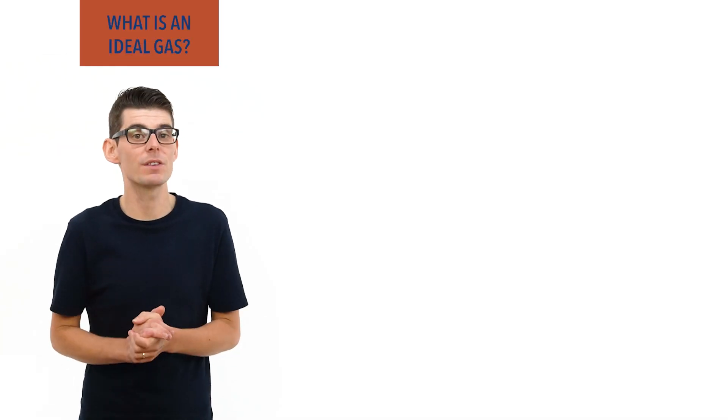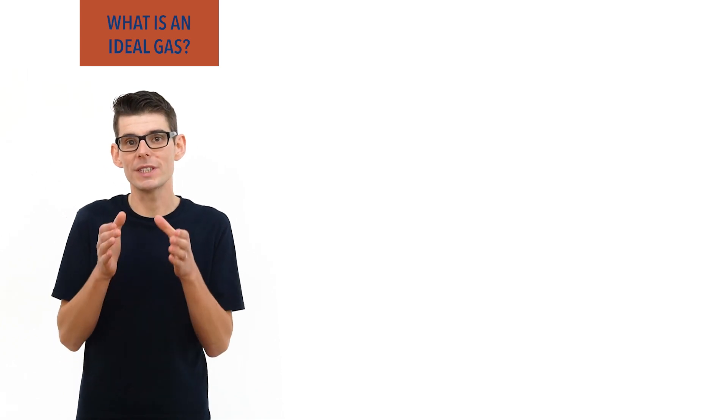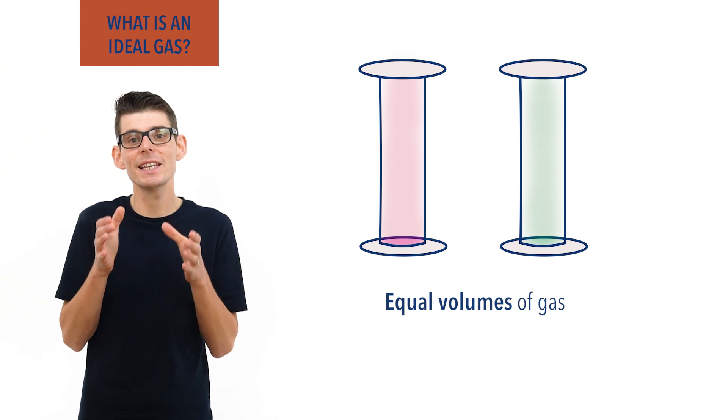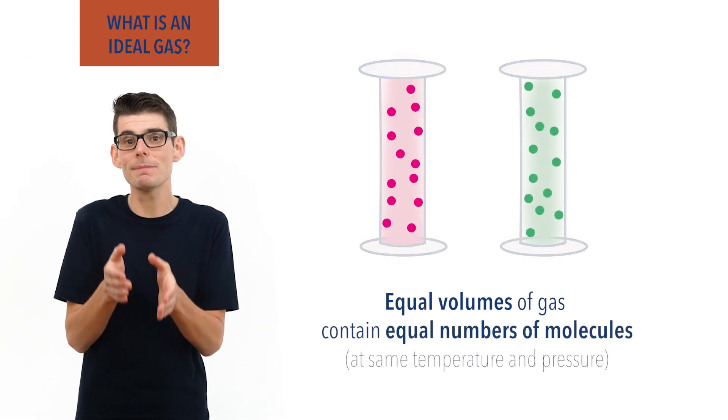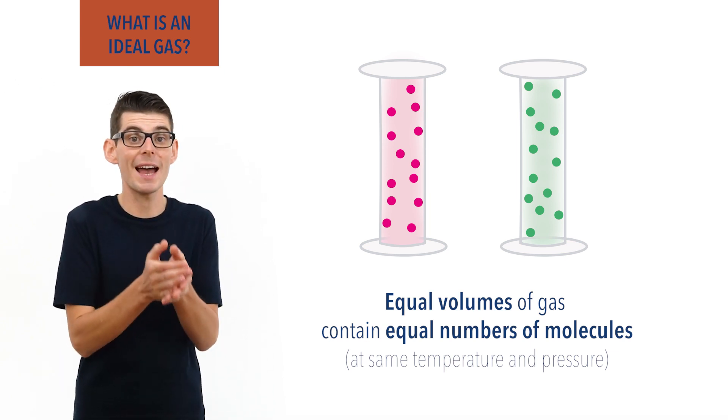In the early 19th century, the Italian scientist Avogadro proposed that equal volumes of gas at the same temperature and pressure contain equal numbers of molecules. In other words, equivalent amounts of different gases have the same volume at the same pressure and temperature.